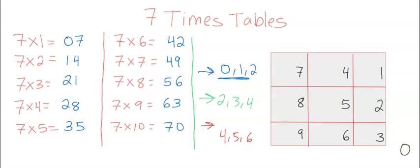So let's see, I'm going to put a 0 in front of the 7, the 1 in front of the 4, and the 2 in front of the 1, okay?